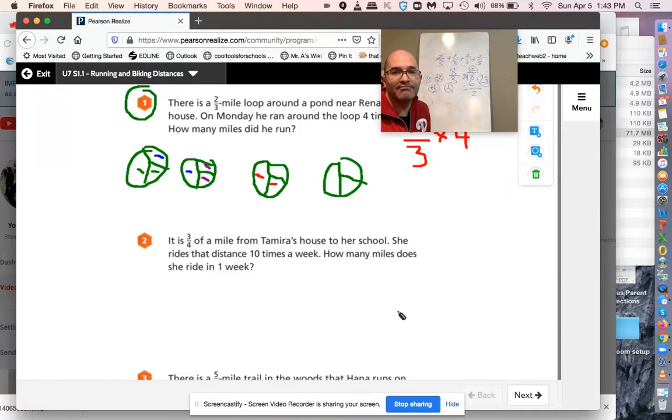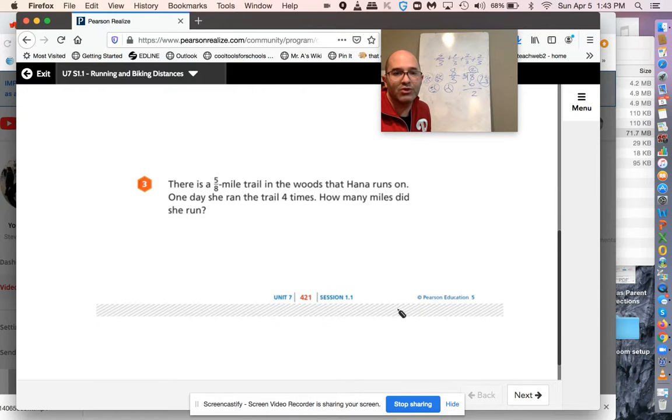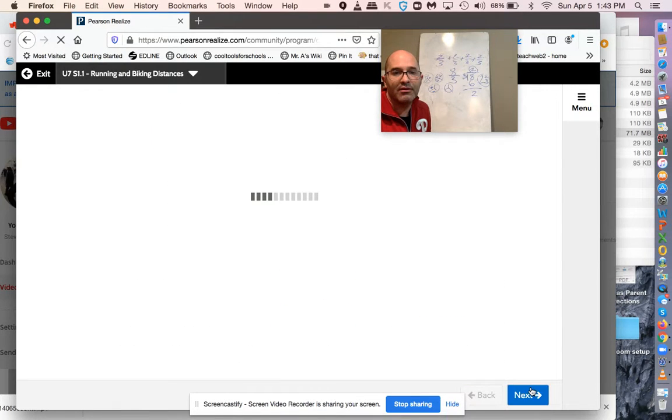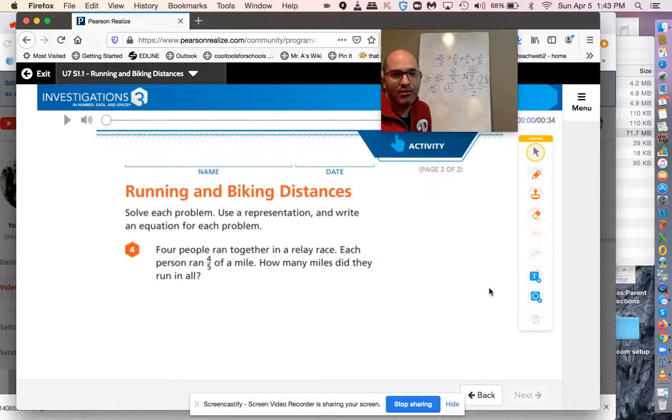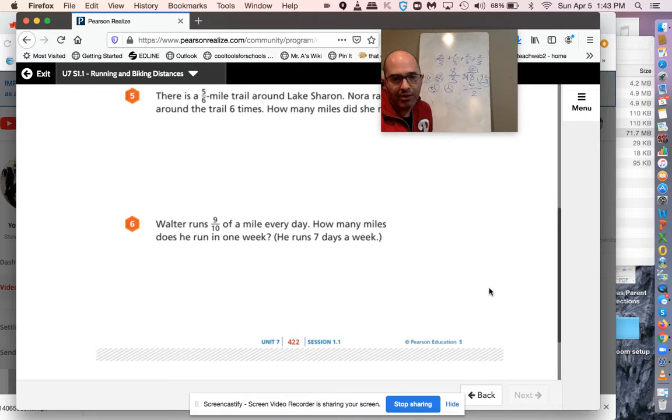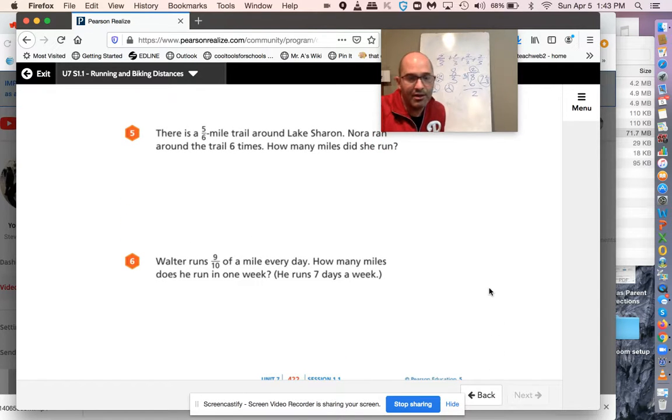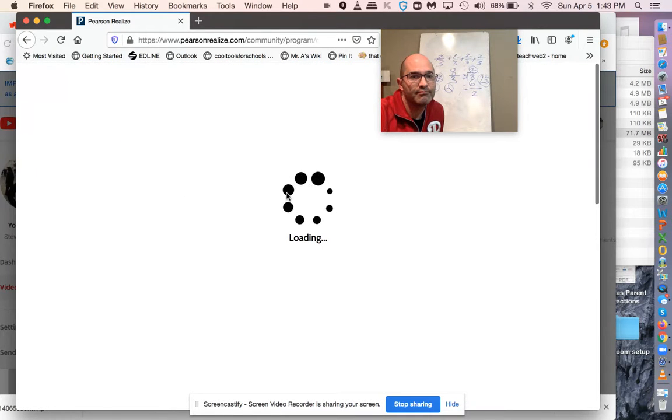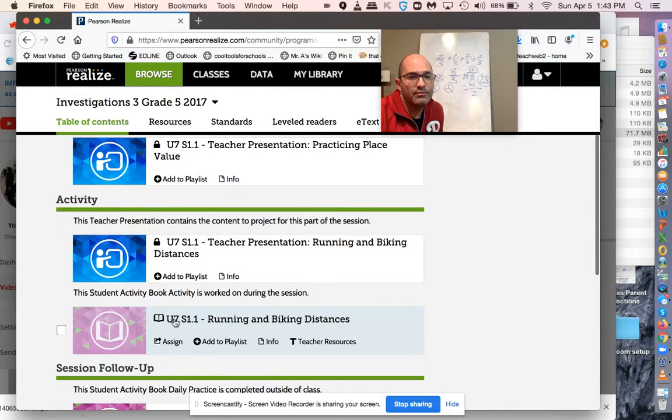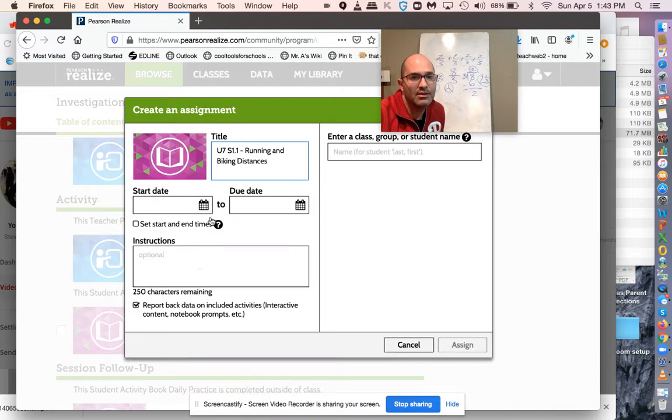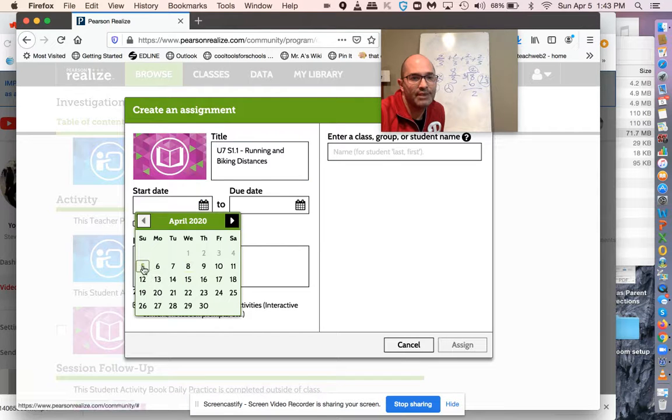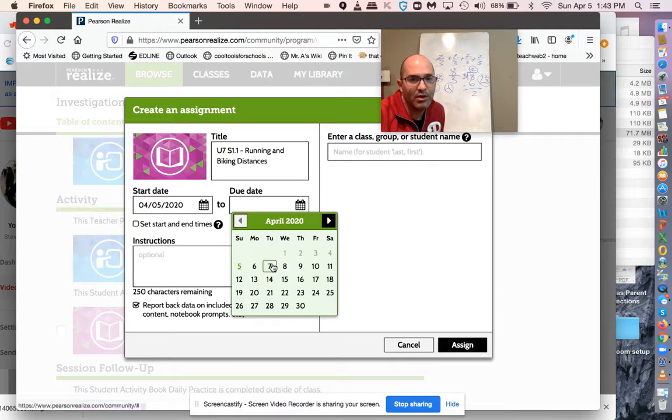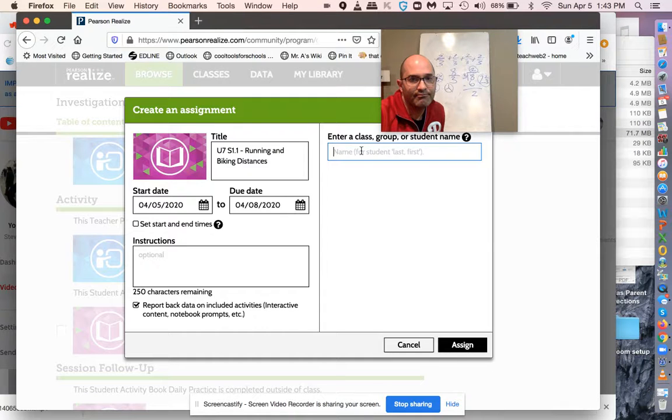And I'd like you to try to do 421 and page 422. You should be able to access it by going to Rapid Identity and going into Pearson Realize and then doing Unit 7, S1.1. And what I'm actually going to do is I'm going to assign that. Today's Sunday, and it'll be due, let's make it due on Wednesday. The whole class.